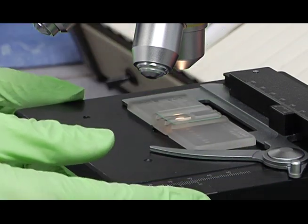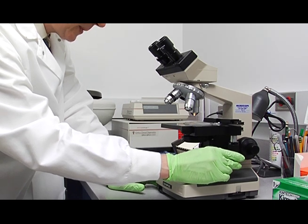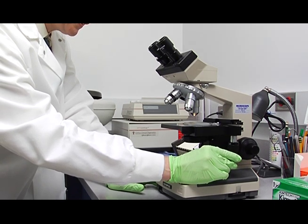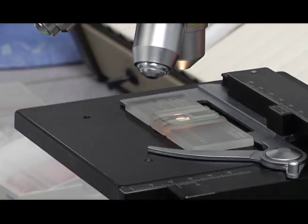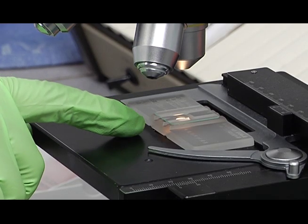Then adjust your stage so that the spot of light is positioned on the hemocytometer. That's where your rulings will show up.